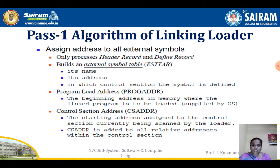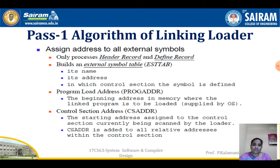Another important control variable is the program load address — the beginning address in memory where the linked program is to be loaded. This is supplied by the operating system. The control section address is initially the same as the program load address, and it is added to all relative addresses within the control section.